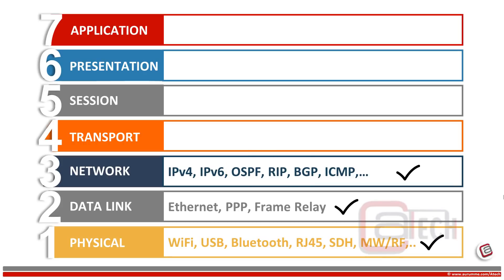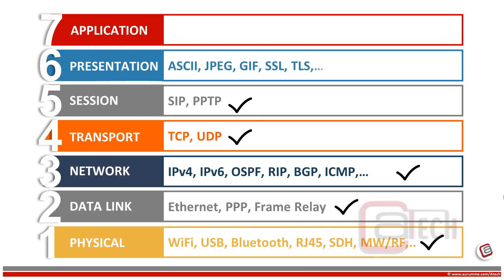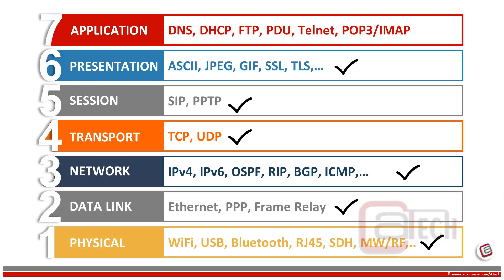The transport layer has two famous protocols: TCP and UDP. Session layer protocols include SIP, PPTP, and so on. Presentation layer protocols are ASCII, JPG, GIF, SSL, and TLS. Application layer protocols include DNS, DHCP, FTP, SMTP, Telnet, POP3, and IMAP.